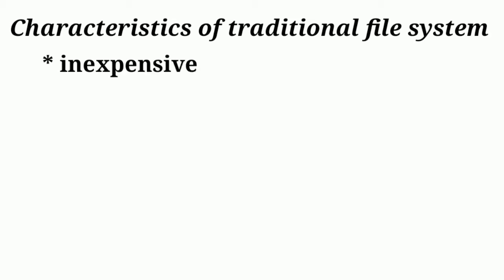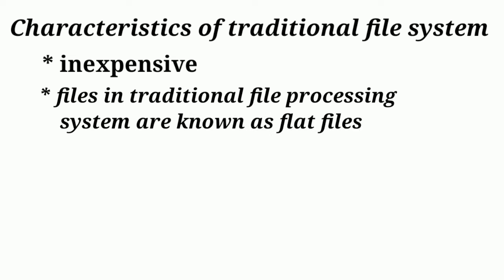Now let's look at the characteristics of the traditional file processing system. In comparison to relational databases, it is inexpensive and suitable for small organizations storing small amounts of data. An example of the traditional file processing system is MS Excel spreadsheets. If we want to store student data, we can do it in an MS Excel worksheet. We also call the traditional file processing system a flat file system.